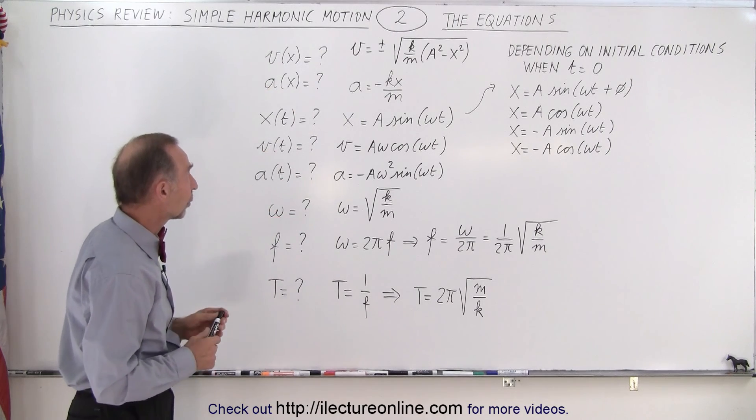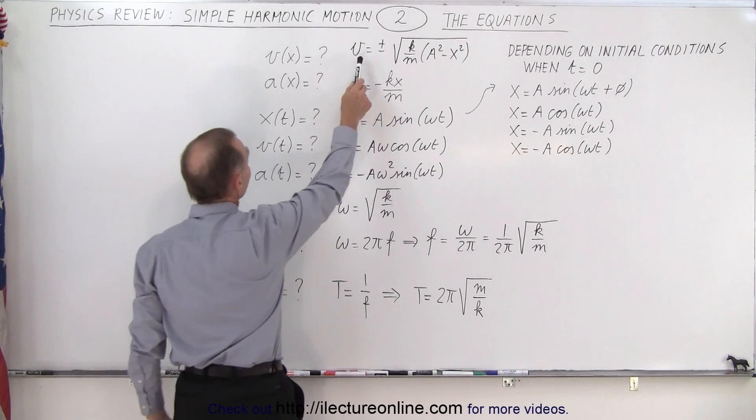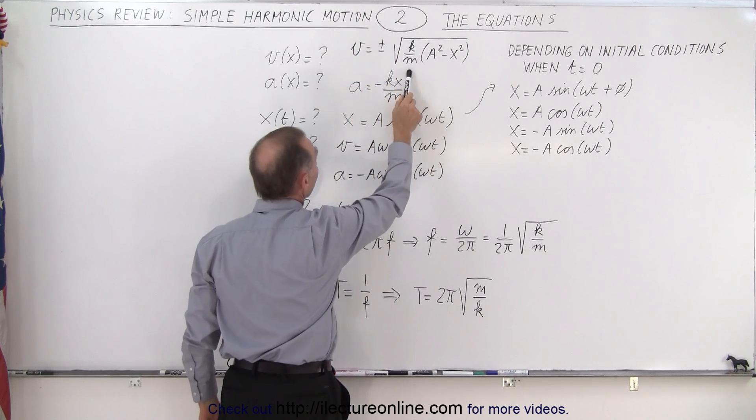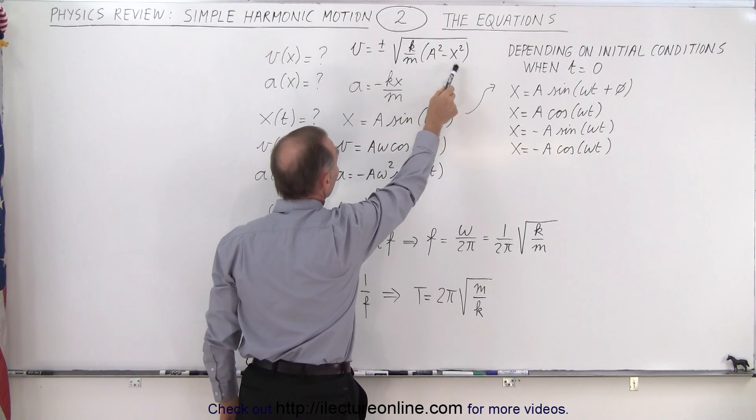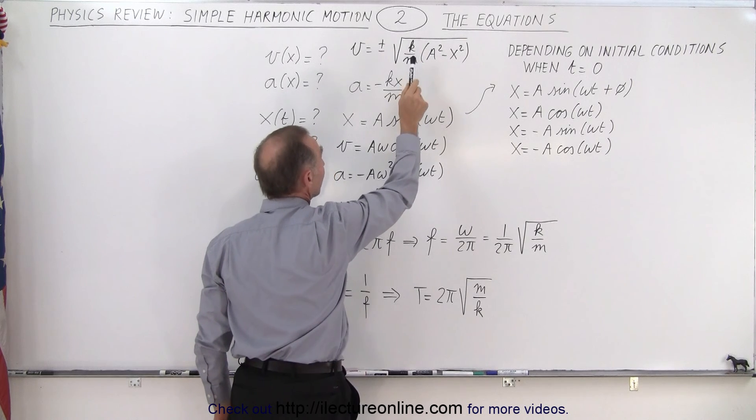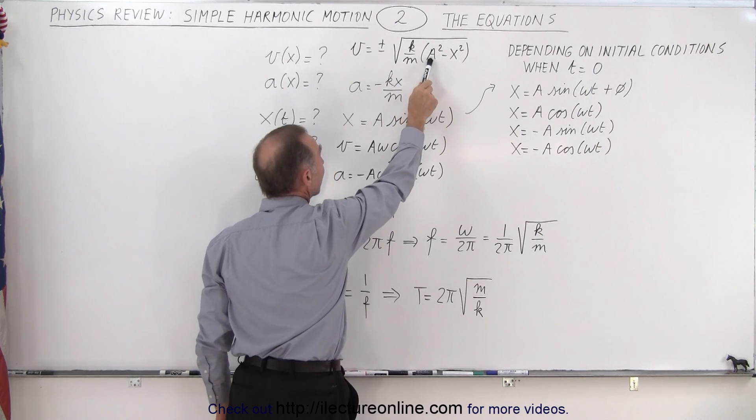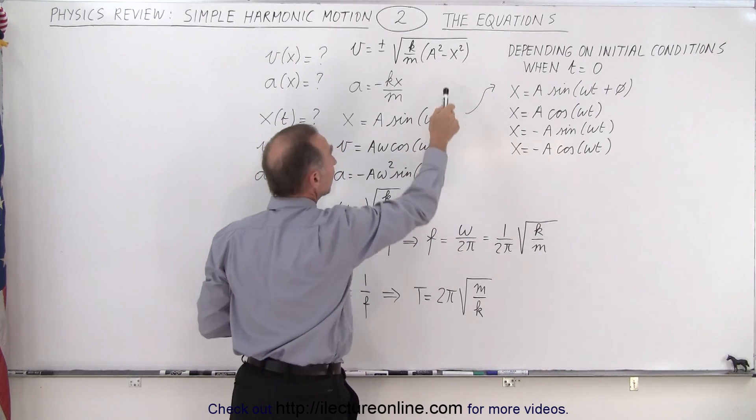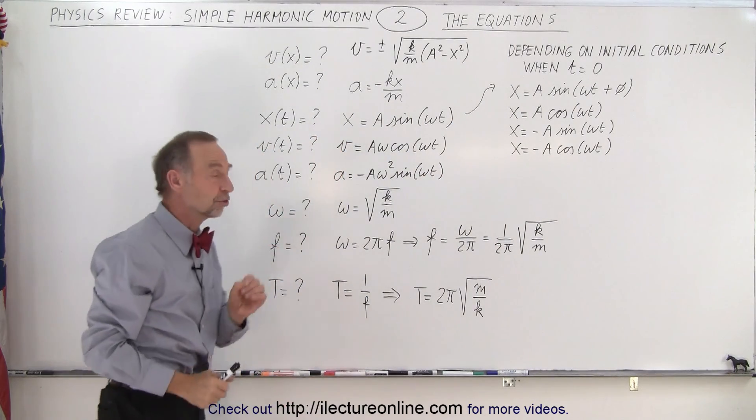And here's the equations that go along with that. So, the velocity as a function of position is equal to plus and minus the square root of k over m times a squared minus x squared. Remember that k is a spring constant, m is the mass, a is the amplitude of the oscillation, the maximum distance away from the equilibrium point, and x is its position.